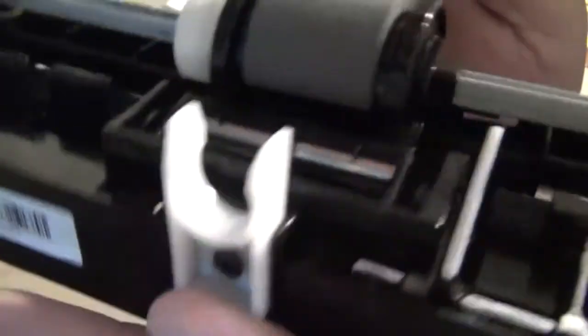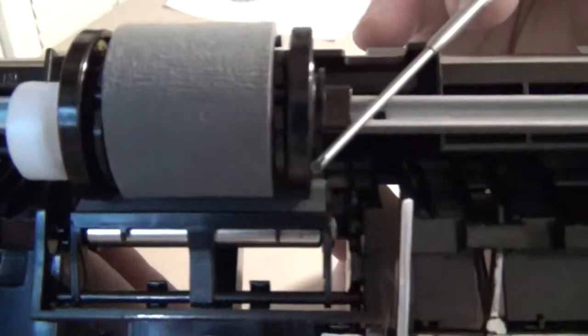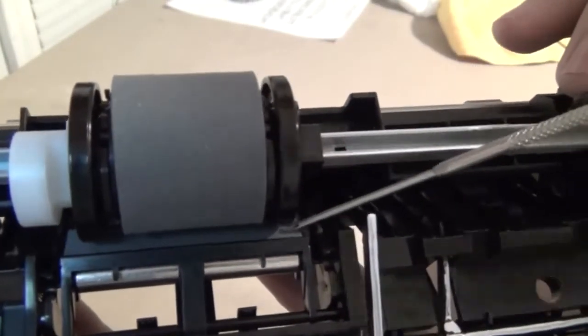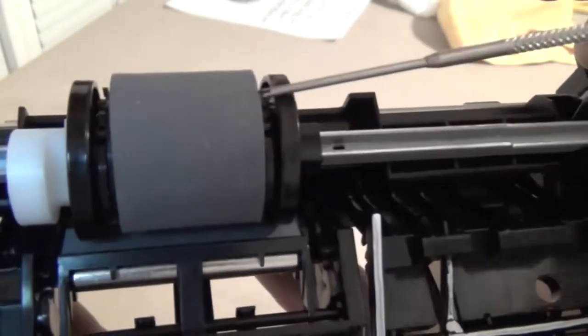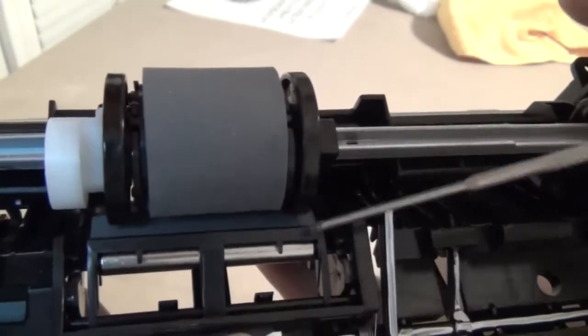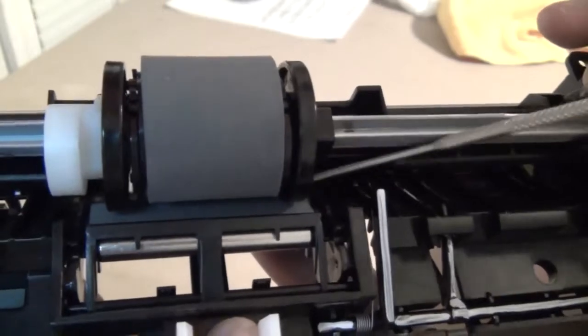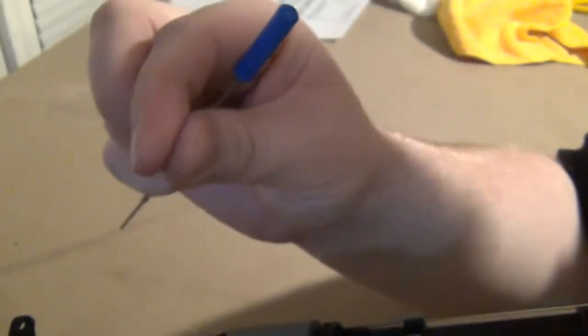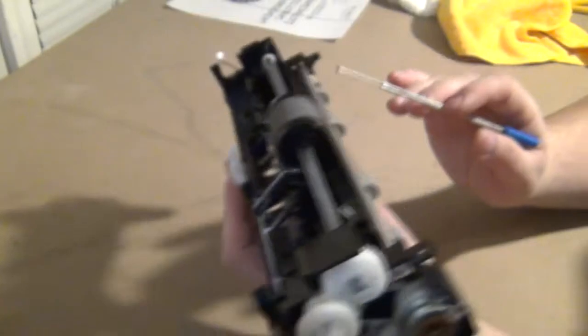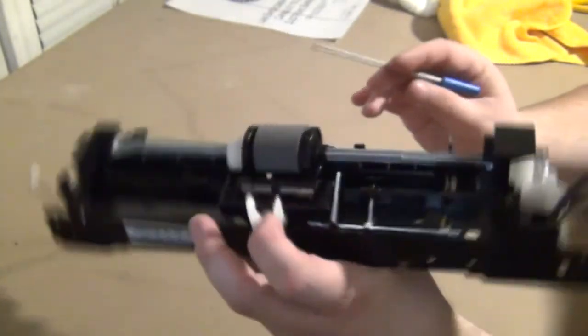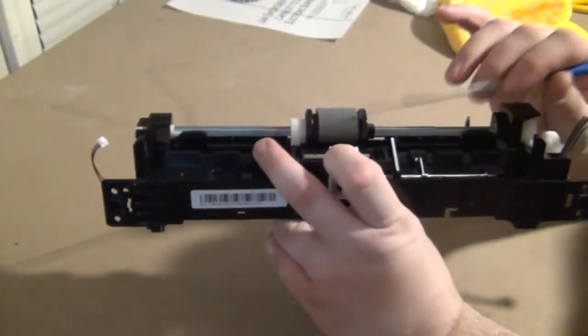There's a separation pad right there. What that does is, when this picks up a page, it rubs the other sheets here, and it only slides one off. Kind of like when you take papers and you slide them against your fingers. Those parts wear out. They're consumable items that will need to be replaced at some point in the printer's life.